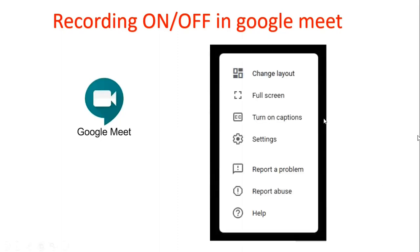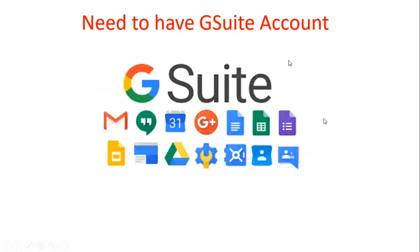If you see at the right side corner when your meeting starts and you don't see a Record button there — remember one thing: this Record button will come only when you have a G Suite account, which is a paid account or paid service from Gmail. So you have to purchase this option from Google. What you have to do is log into your G Suite account. To do that, simply search on Google for 'Admin' and log in.